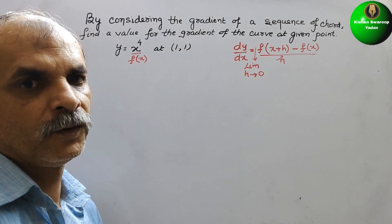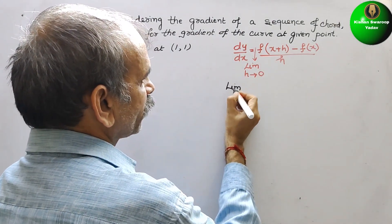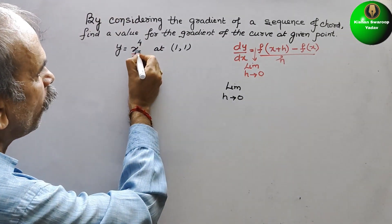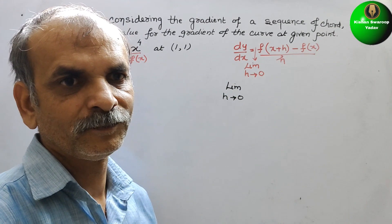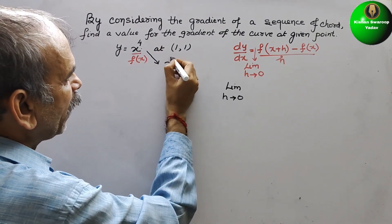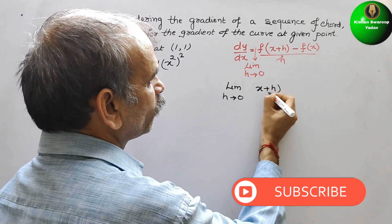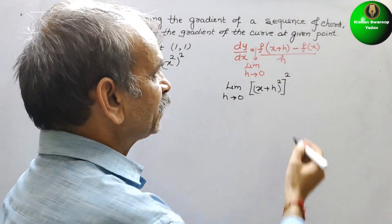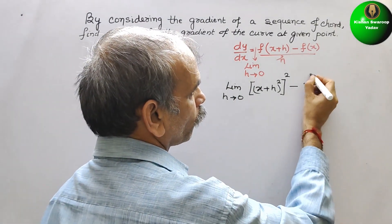Now we will solve it. We write: limit as h tends to 0 of f(x+h) minus f(x) by h. f(x+h) means in place of x in x to the power of 4, we write x plus h. Also, x to the power of 4 is x squared whole squared. So now it will be (x+h) squared, whole squared, minus f(x), which is x to the power of 4, all divided by h.